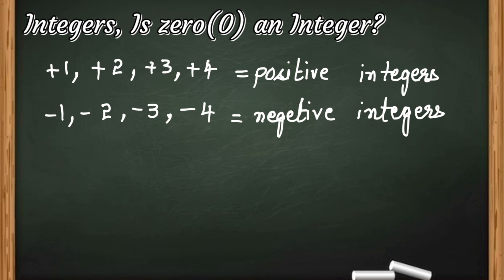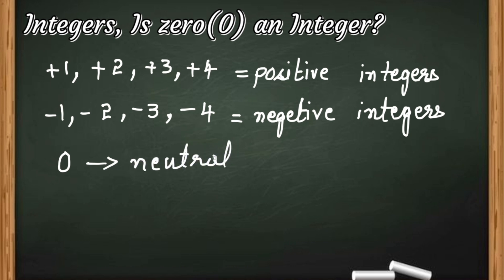Now, 0 is also an integer, but it is neither a positive integer nor a negative integer. So we can say that 0 is a neutral integer, because it is neither positive nor negative, but it is an integer — it is a neutral integer.